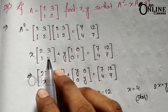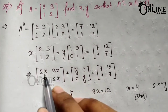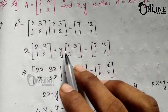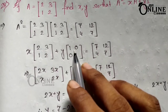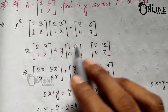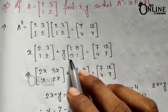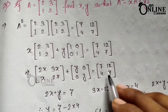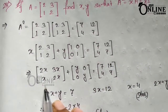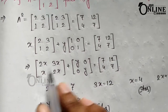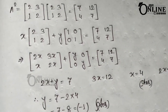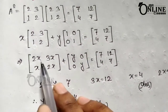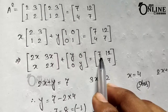First, multiply x with each element of matrix A: 2x, 3x, x, 2x. Similarly, y into the identity matrix gives y, 0, 0, y. So the expanded form equals [7, 12; 4, 7].